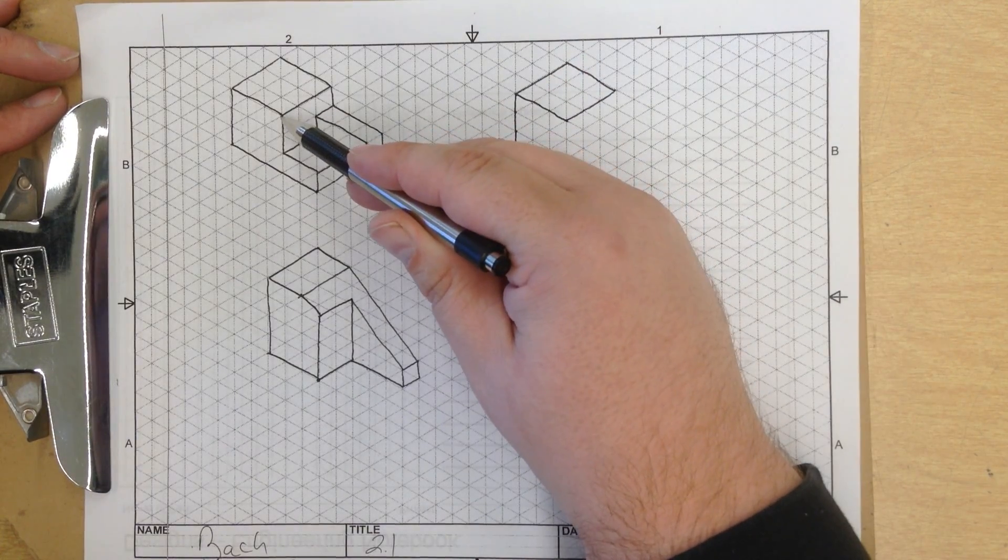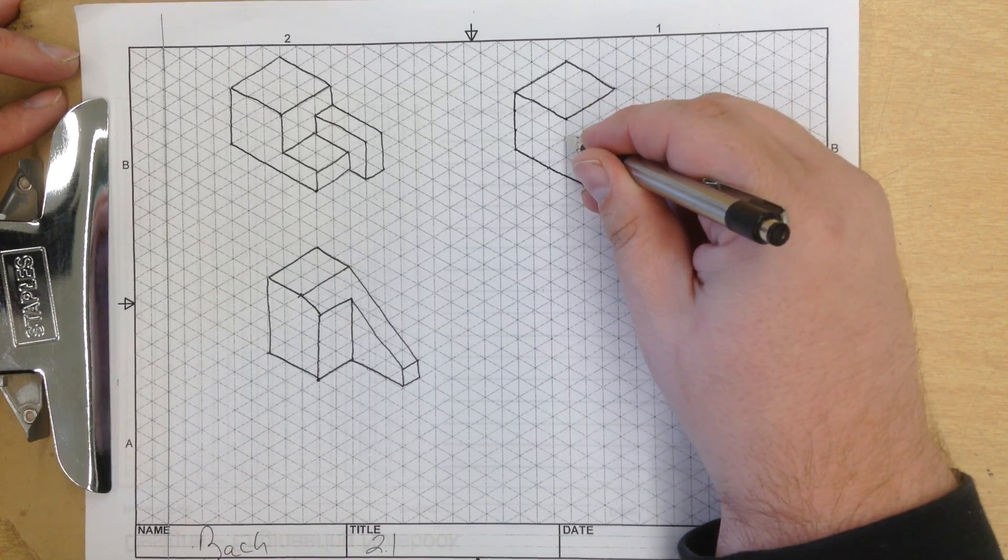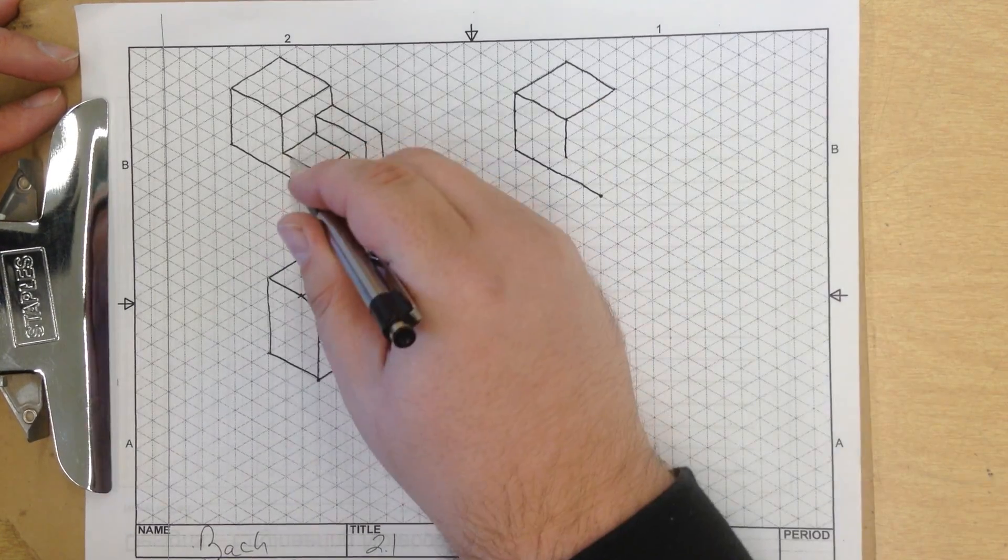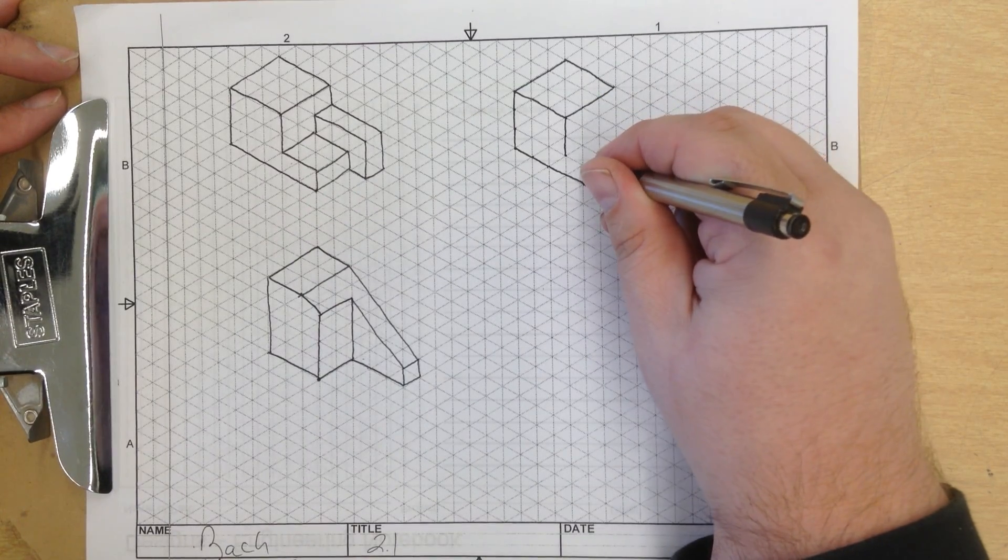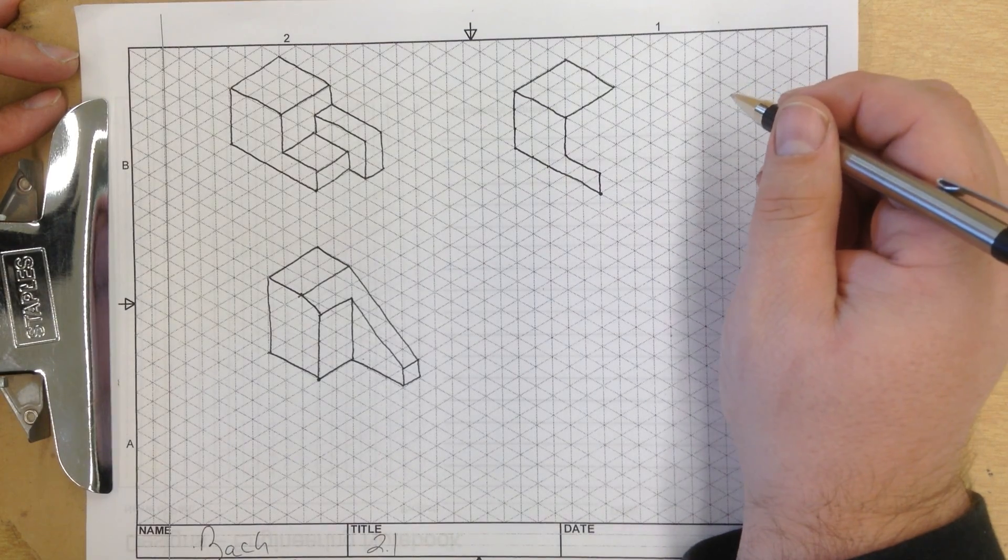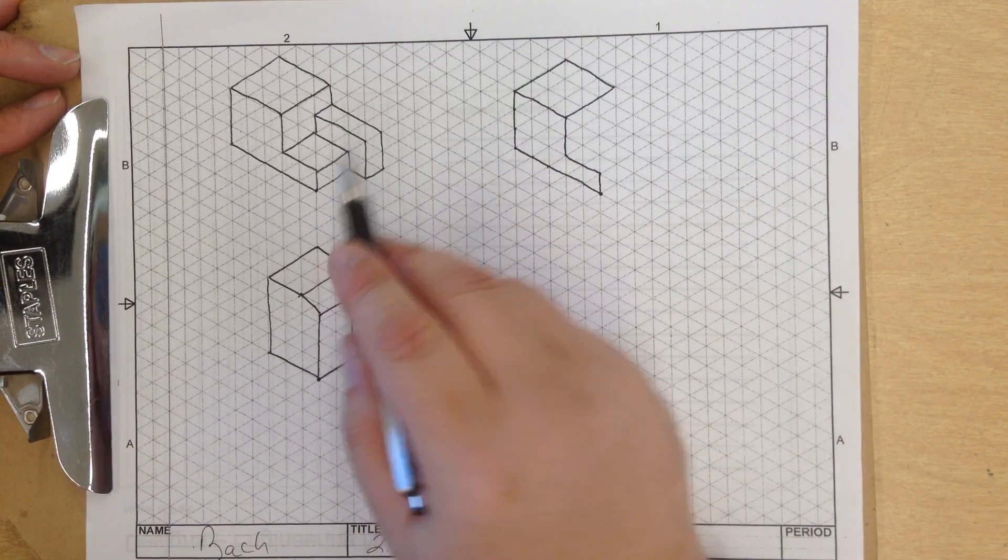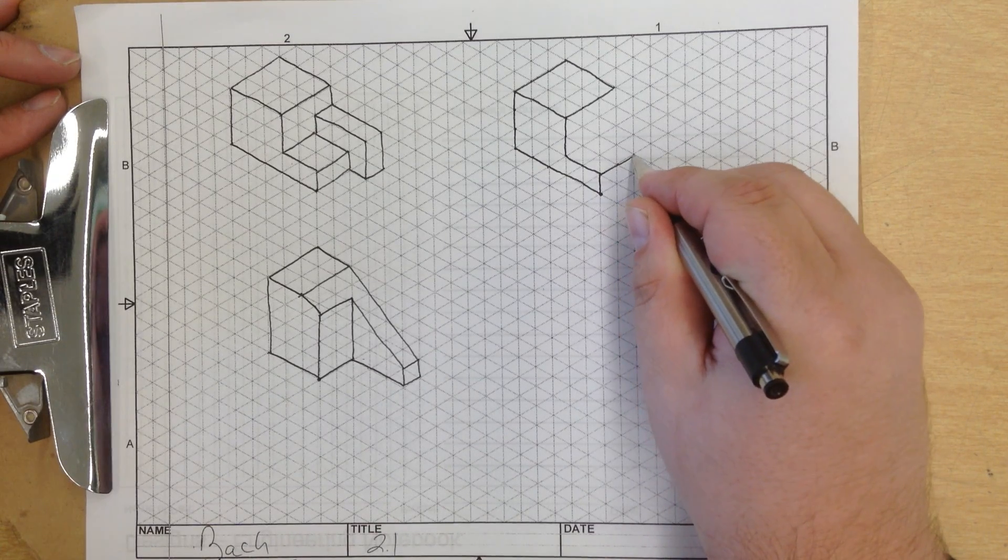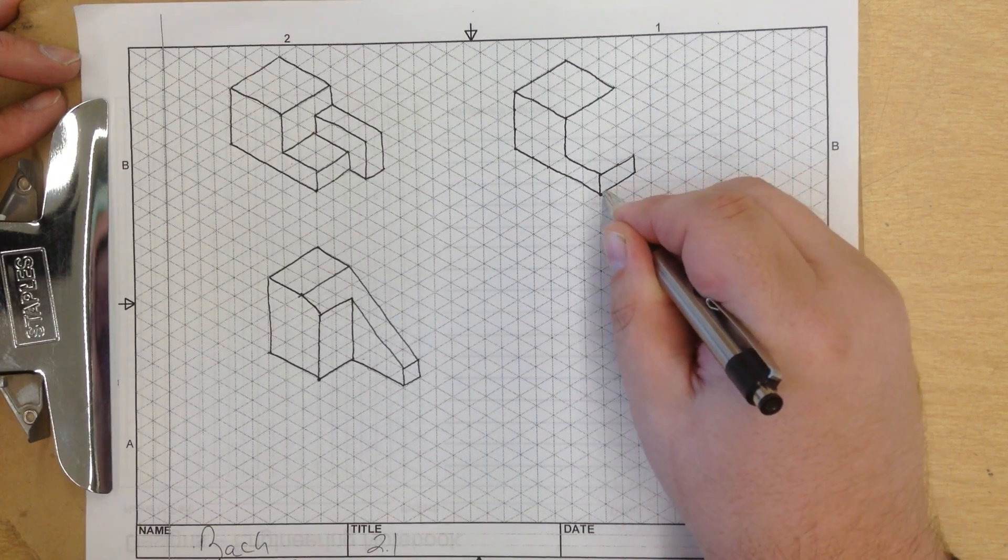Now you look at the drawing. It goes 2 units down, so 1, 2. Draw a line. 1, 2 units over - 1, 2. And we close the shape. If we check out the front part here, it's 2 units over - 1, 2 - then 1 unit down. Close the shape.